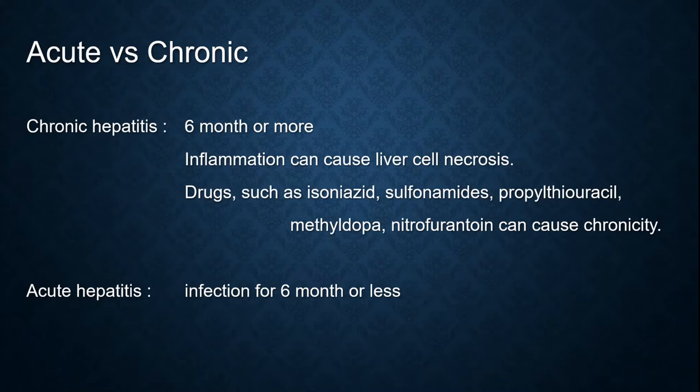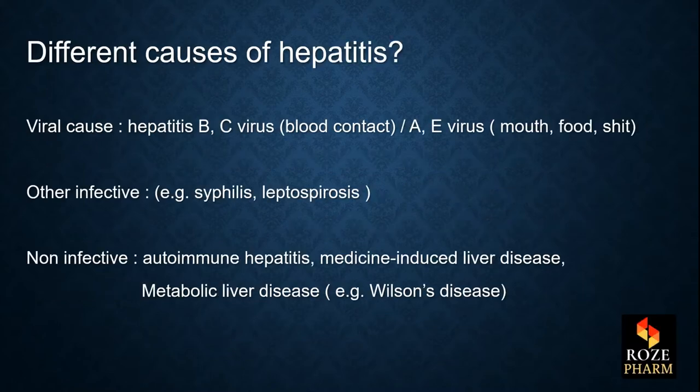Acute hepatitis means infection lasting six months or less. What are the different causes of hepatitis? There are viral causes — viruses from blood contact, or viruses through the mouth, food, and feces. Other infective causes include syphilis and leptospirosis. For non-infective causes, there are autoimmune hepatitis, medicine-induced liver disease, and metabolic liver disease — for example, Wilson's disease.